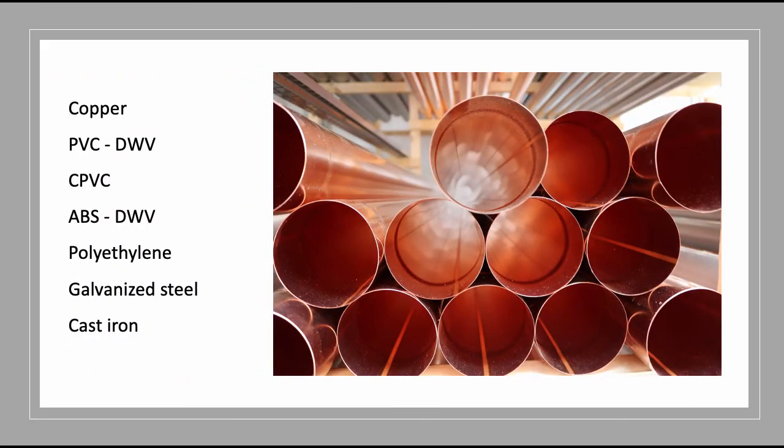The piping materials allowed are usually copper, PVC, DWV, CPVC, ABS DWV, polyethylene, galvanized steel, and cast iron. The use of short radius elbows is often prohibited. You can normally use standard fittings until you reach a certain size, at which point you may be required to use drainage pattern fittings — the DWV type.